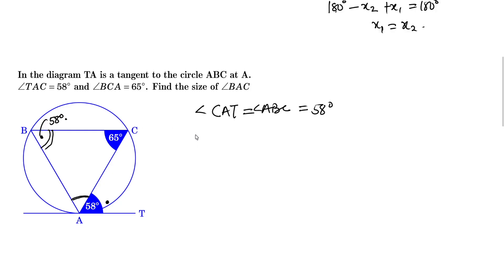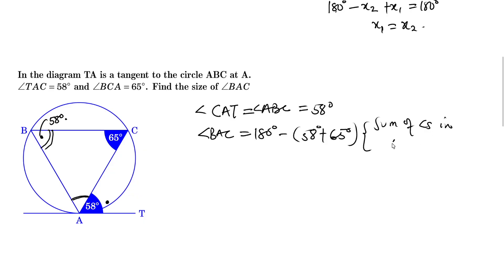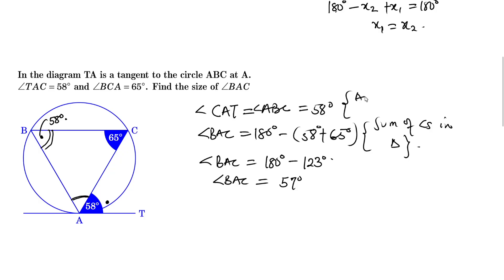To find angle BAC, since BAC is a triangle, angle BAC equals 180 degrees minus (58 plus 65) degrees, which is 180 minus 123 degrees. Therefore angle BAC equals 57 degrees. Remember, the 58 degrees was justified because those are angles in alternate segments.